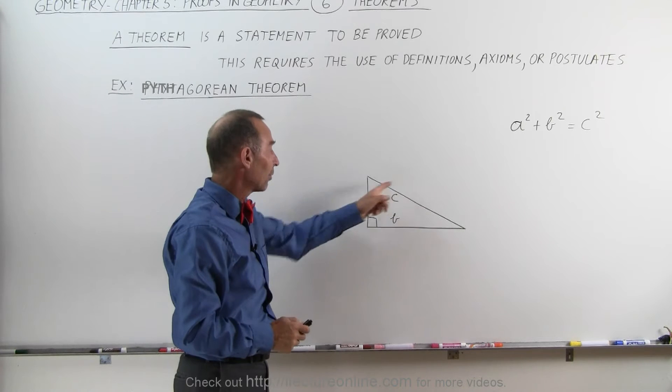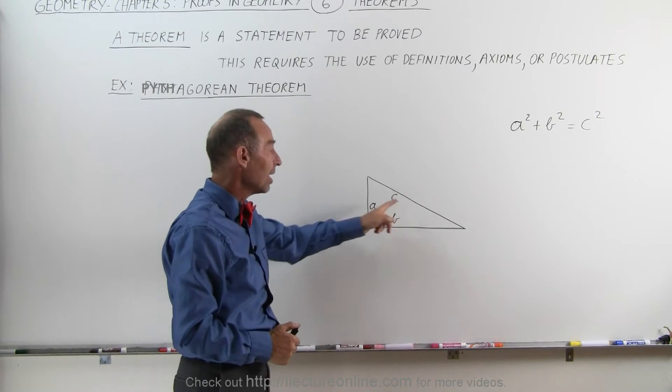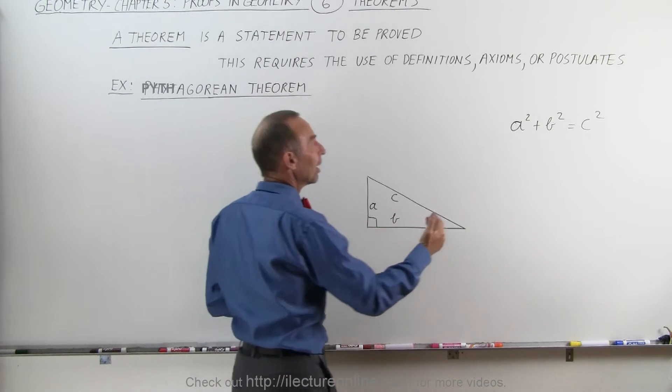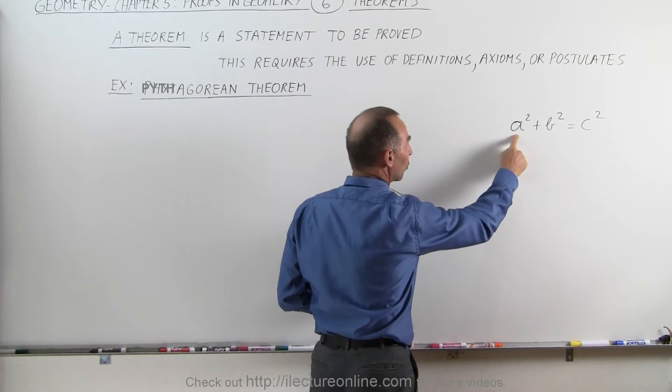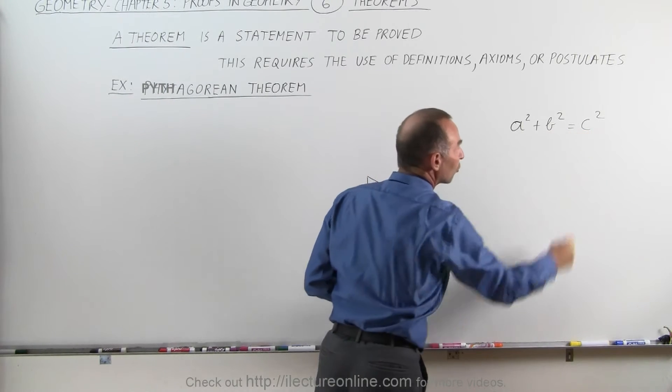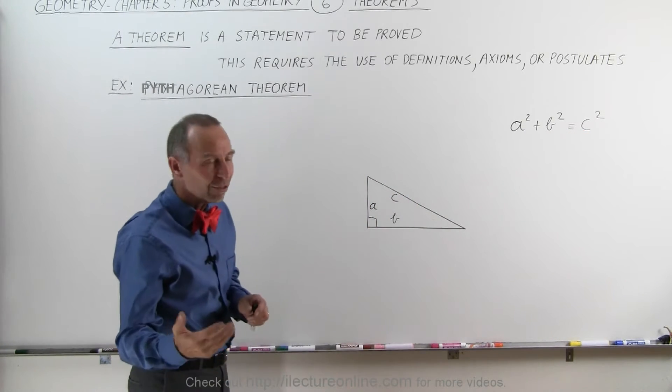And of course, we have the three sides, A, B, and C. And I wrote them on the inside for a reason you'll see in just a moment why. Pythagorean Theorem tells us that one side squared plus the second side squared equals the hypotenuse squared.